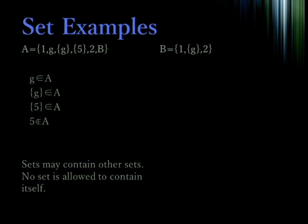Here we have a set A, which contains 1, G, the set containing G, the set containing 5, 2, and the set B. And we have B, which contains 1, the set containing G, and 2. Note that G is a member of A, the set containing G is a member of A, and the set containing 5 is a member of A, but the number 5 itself does not belong to A.